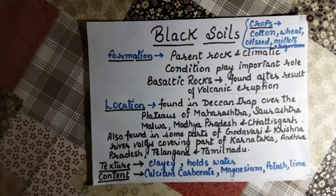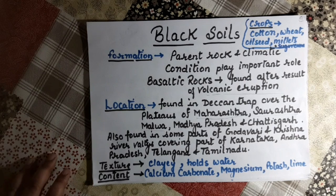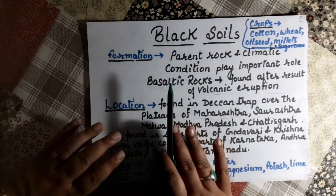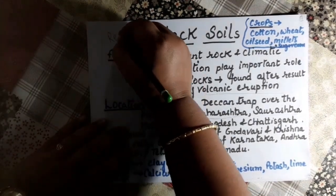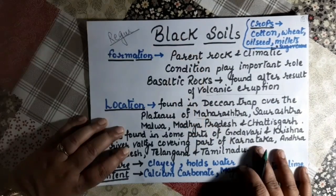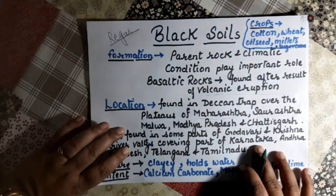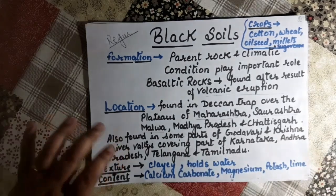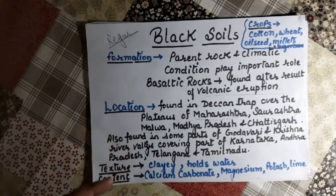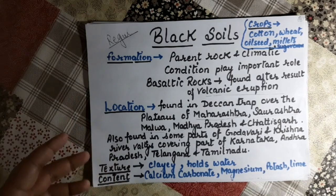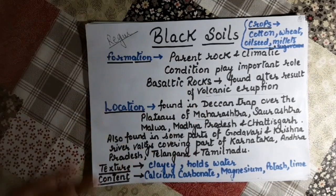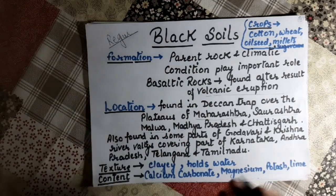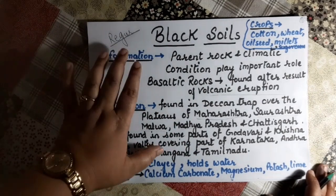The next soil is black soil, also known as Regur soil. Sometimes the question is asked in board exams: write a short note on Regur soil — so you should be familiar with this term. Black soil is also called black cotton soil.